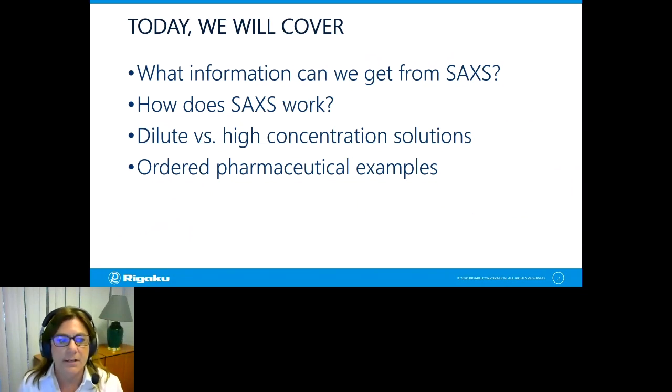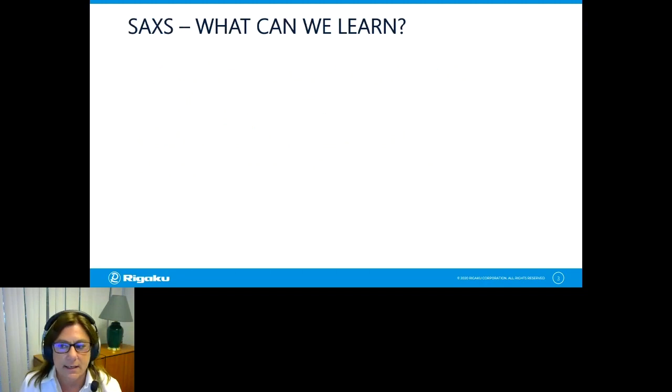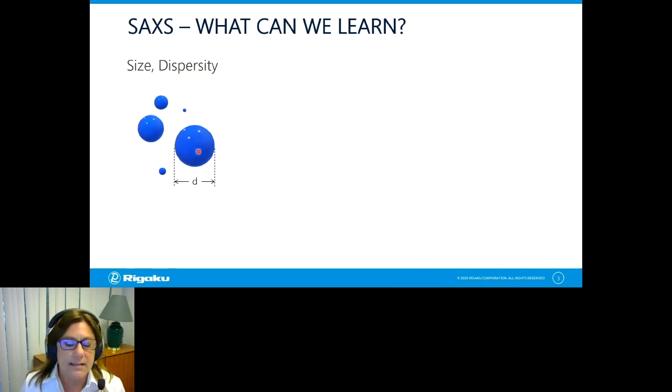Today what we're going to cover is what types of information we can get from small angle x-ray scattering. If you saw the talk earlier in the day, she mentioned a little bit about neutron scattering. We'll focus on x-rays. We'll talk about how SAXS works. We'll talk about solutions, dilute versus high concentration solutions, and how they apply to pharma. And we'll talk about some ordered pharmaceutical samples. So what can we learn from this technique? Well, SAXS most specifically tells us about size. So if we wanted to know the size of this particle, or basically the d here, then we could easily measure for a solution of these particles and determine the size. And if it turns out that there's a dispersed mixture, meaning that they're different sizes, then we can get a measure of that as well.